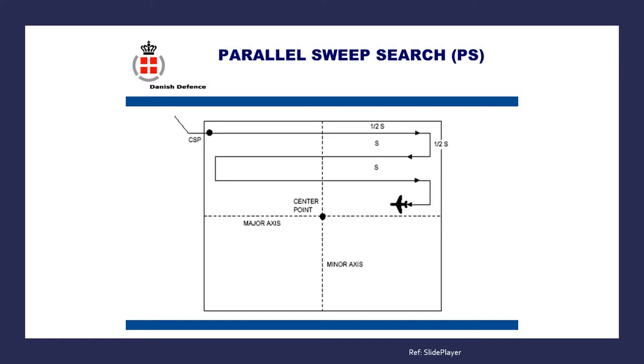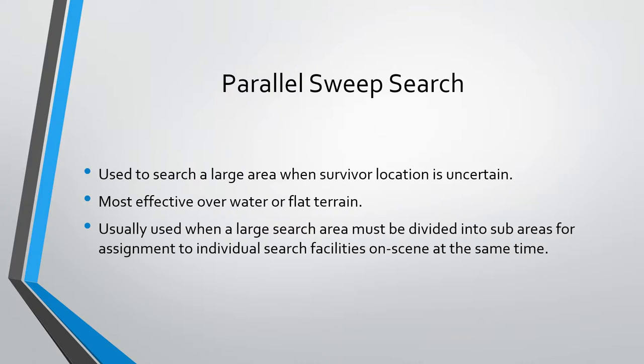The parallel sweep search is used to search a large area where survivor location is uncertain. It is most effective over water or flat terrain, and is usually used when a large search area must be divided into sub-areas for assignment to individual search facilities on scene at the same time.